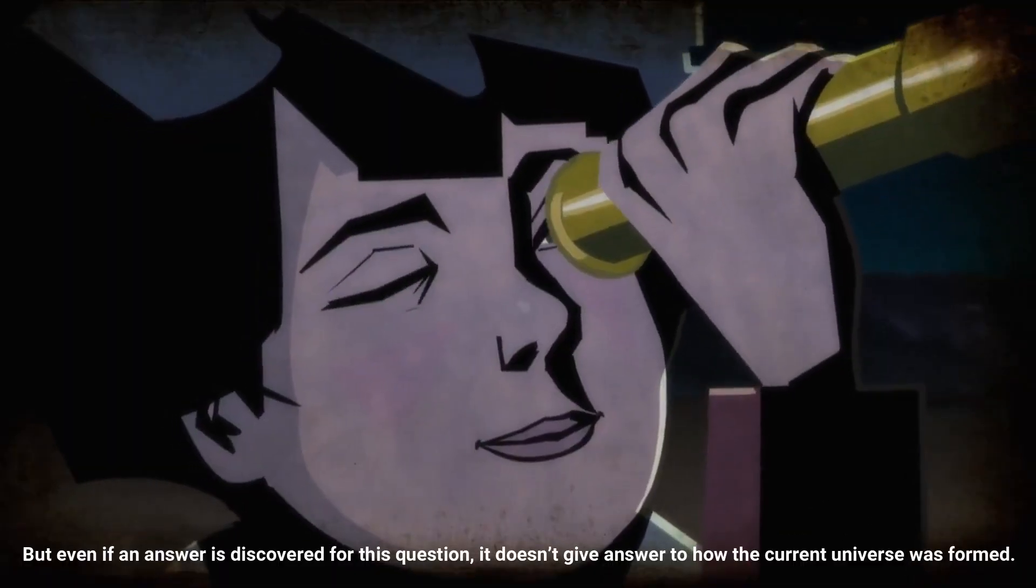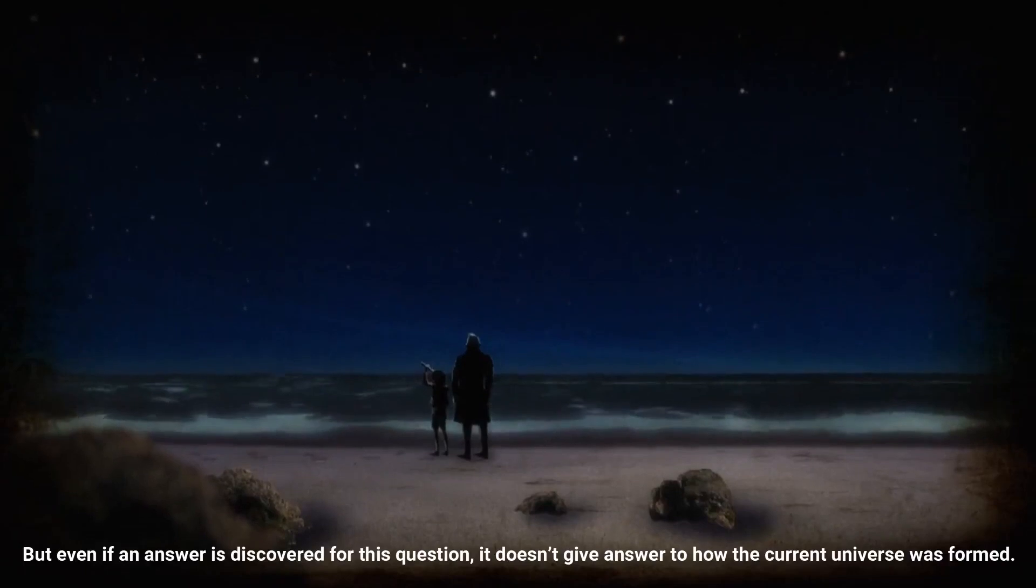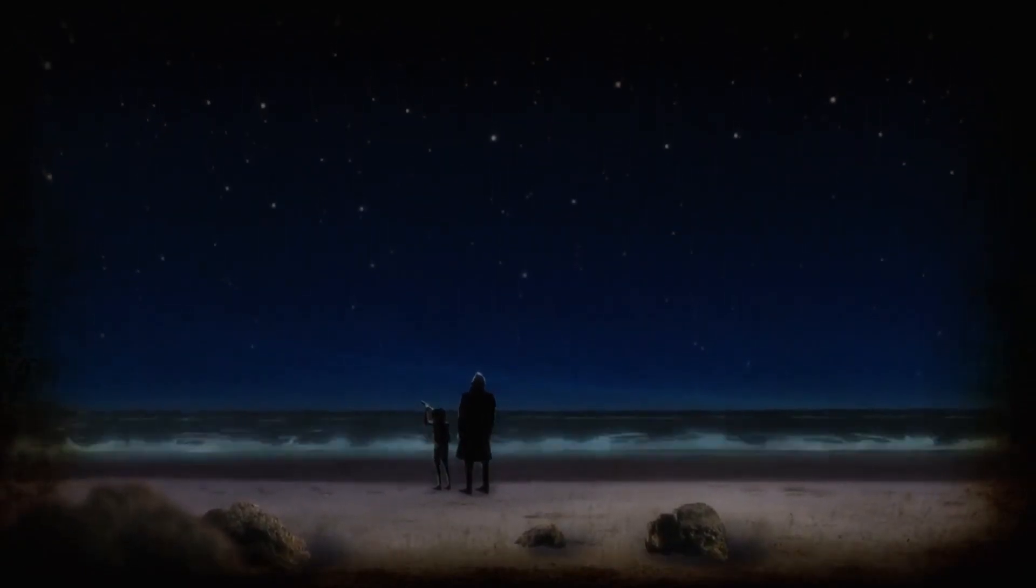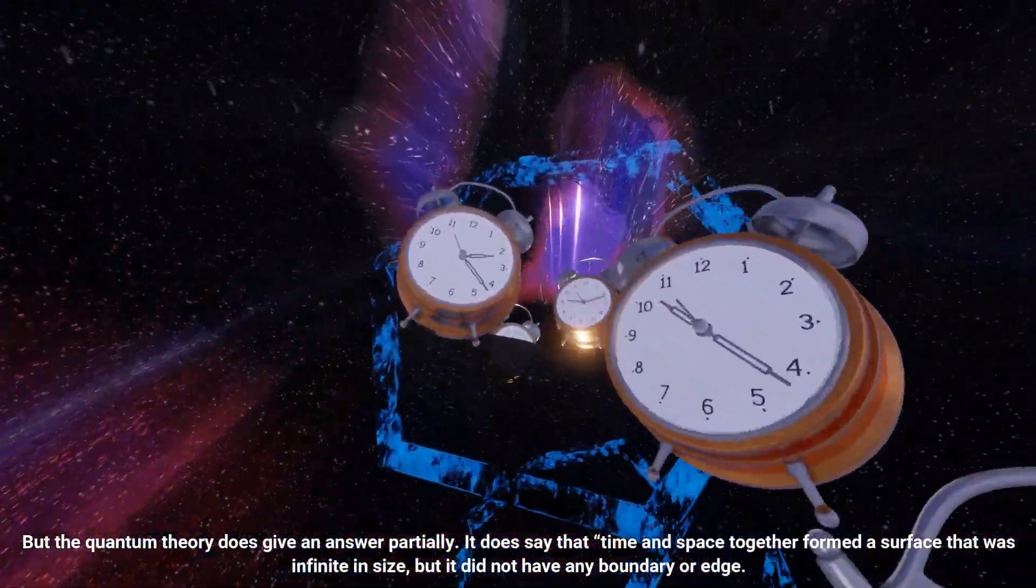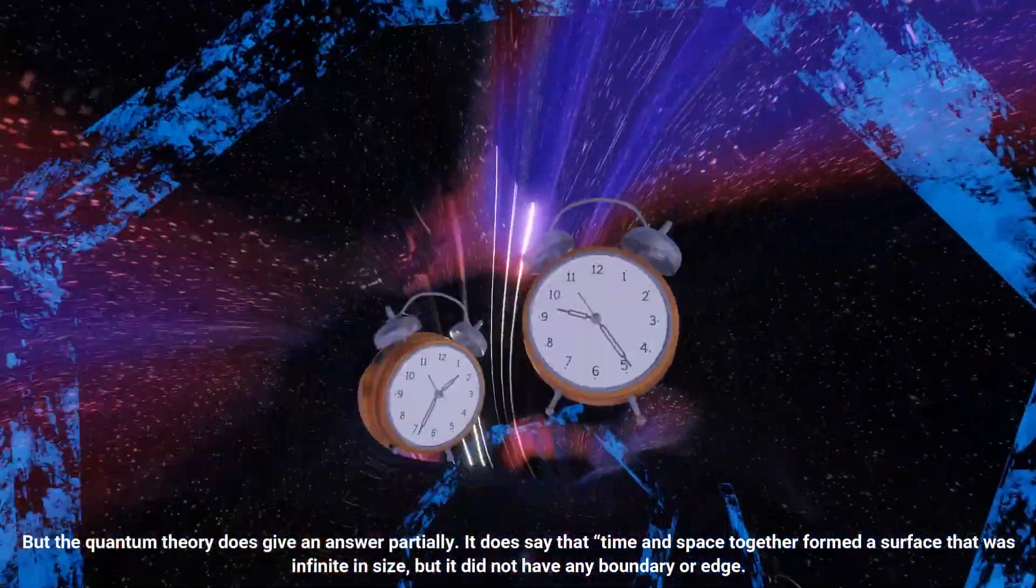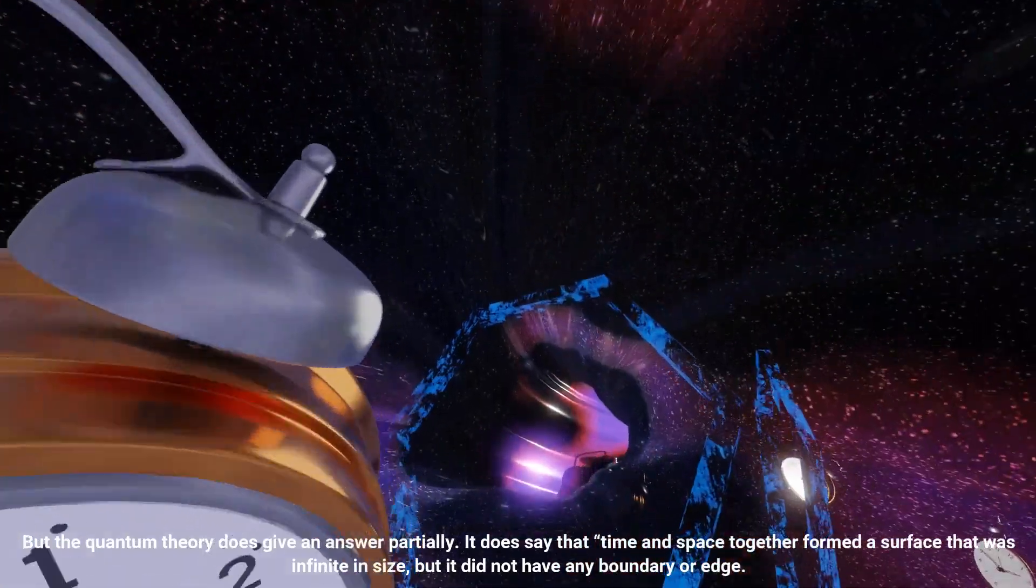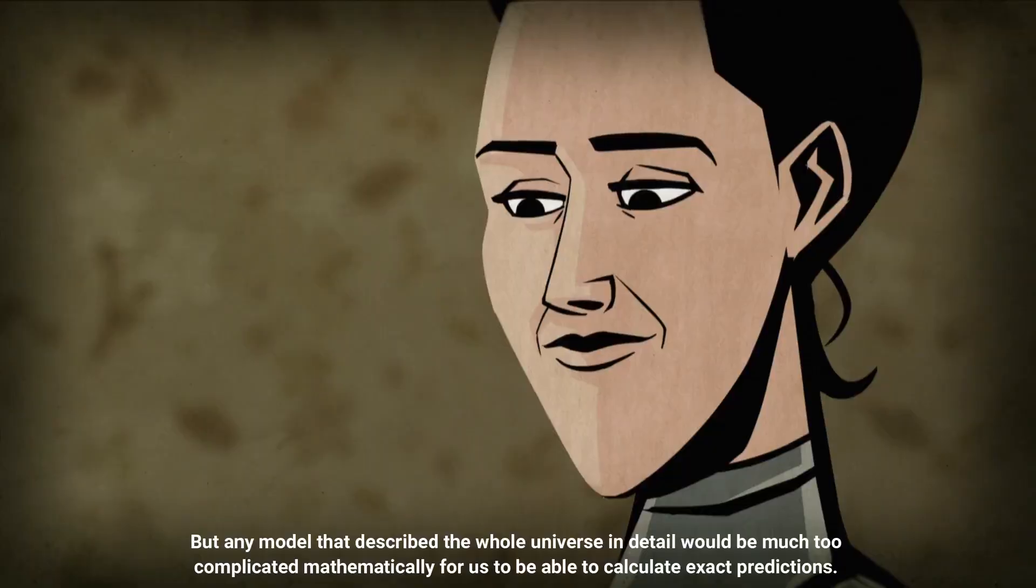But even if an answer is discovered for this question, it doesn't give an answer to how the current universe was formed. But the quantum theory does give an answer partially. It does say that time and space together formed a surface that was infinite in size but it did not have any boundary or edge.